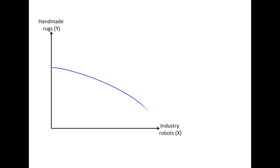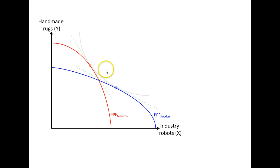So what happens when we introduce trade between these two countries? We start from the autarky situation. Sweden and Morocco will try to produce more of the good they are relatively good at — where they have a comparative advantage. Sweden will try to produce more and more industry robots and will have to reduce production of handmade rugs. Vice versa for Morocco: they want to produce more handmade rugs and therefore have to reduce production of industry robots. This continues as long as we have different relative prices, until we reach the same relative price.